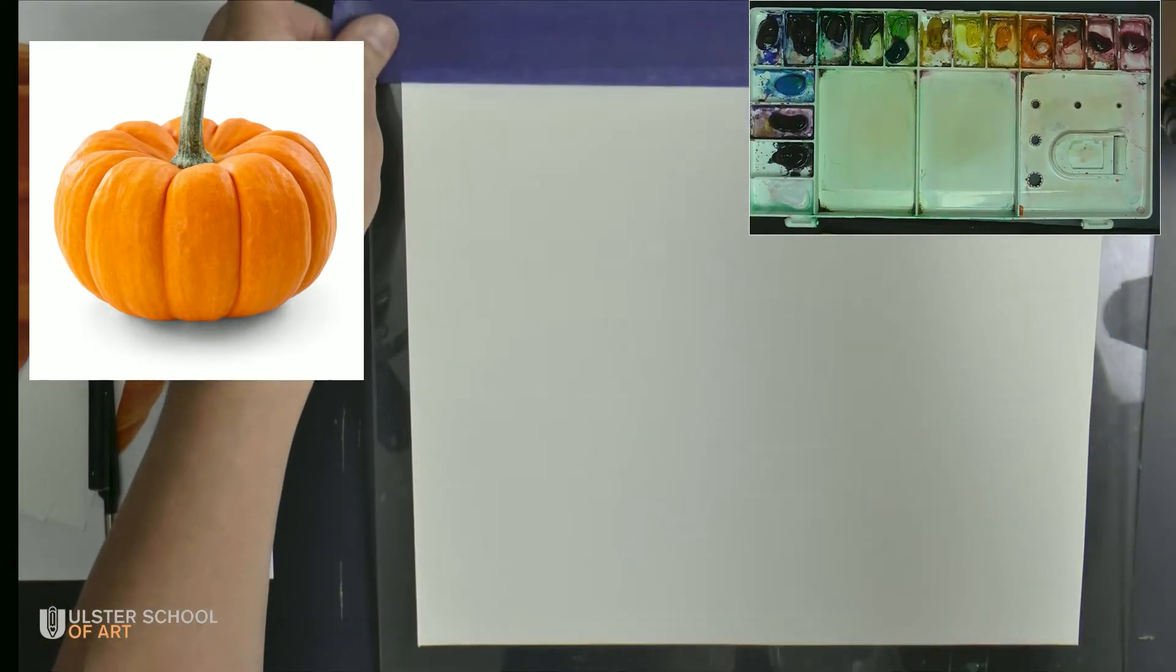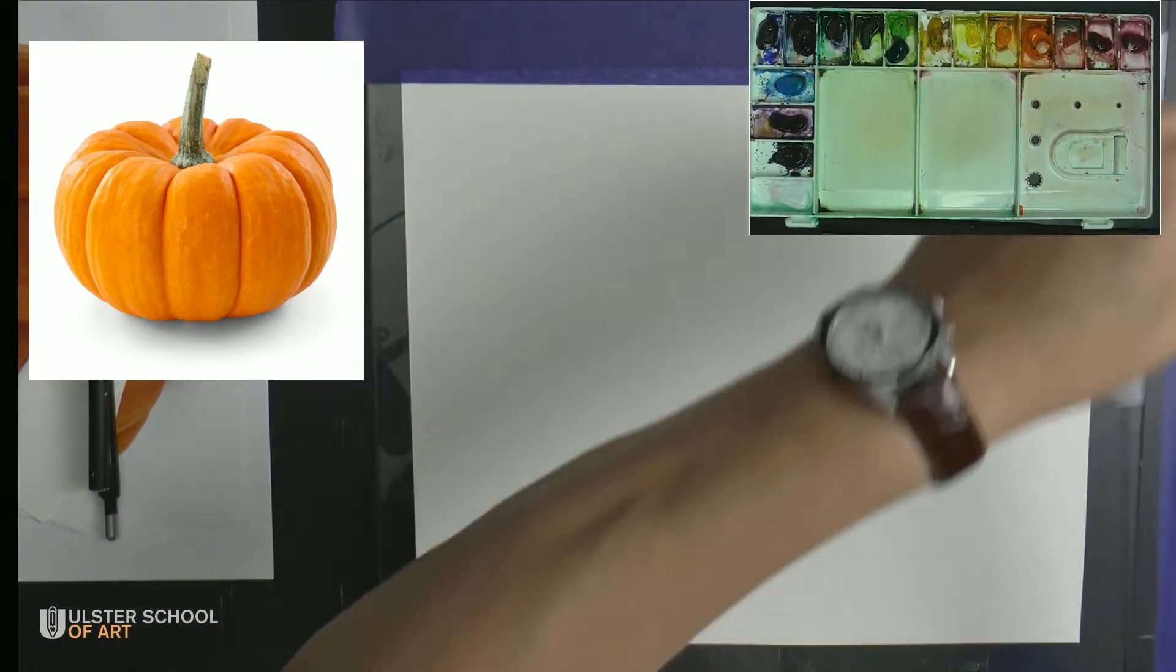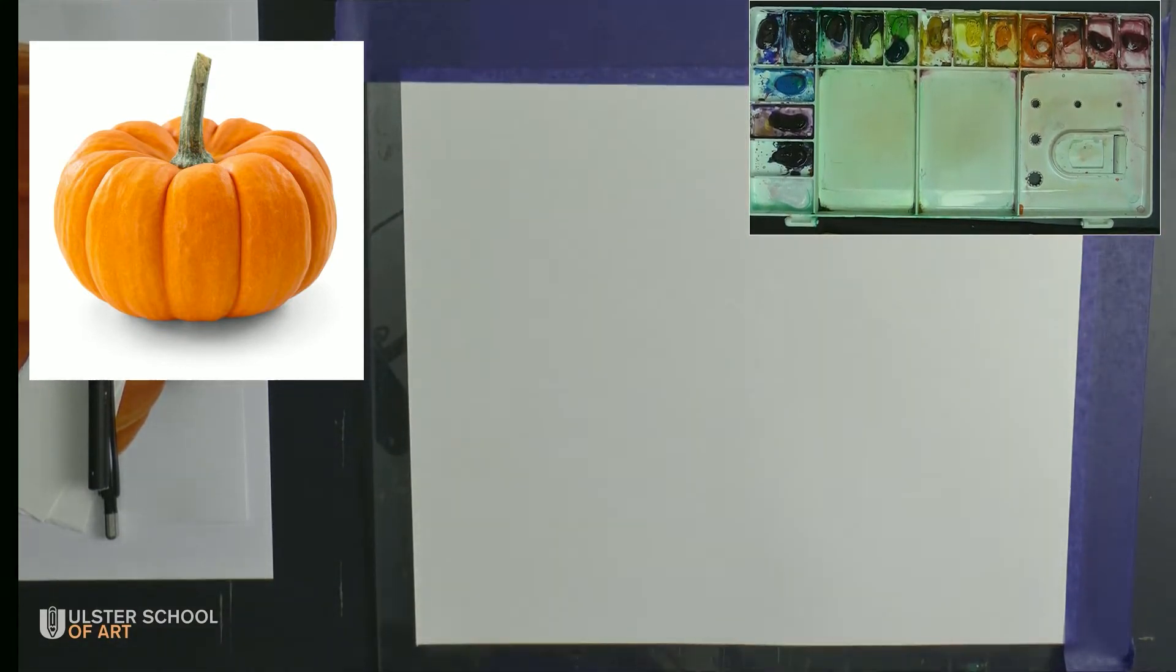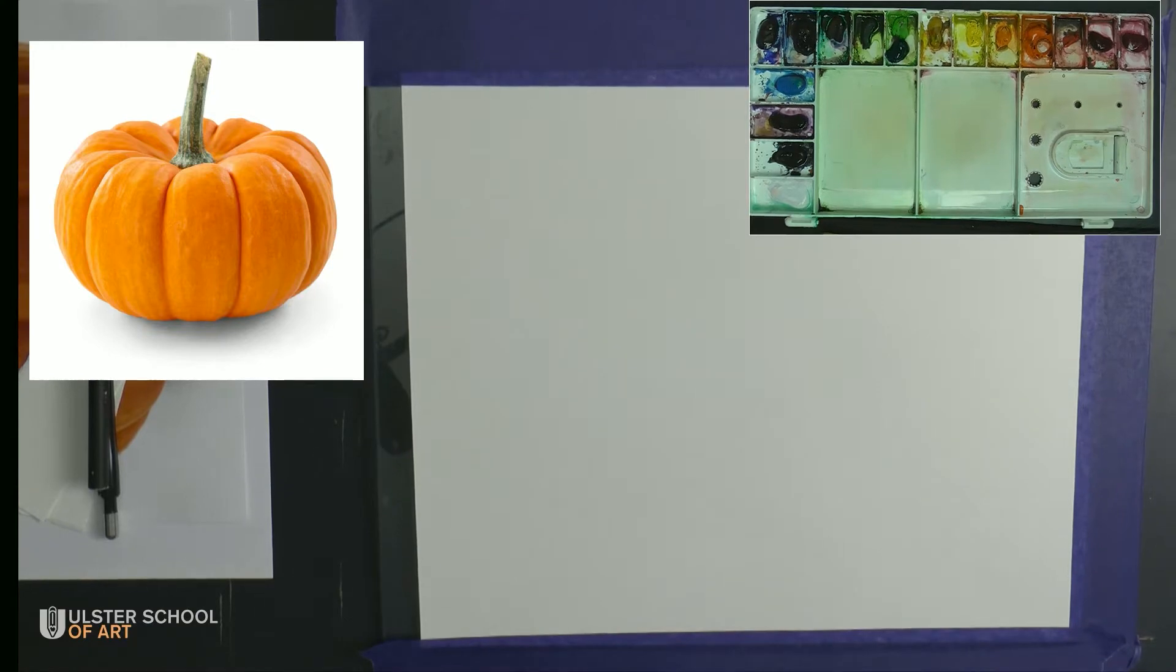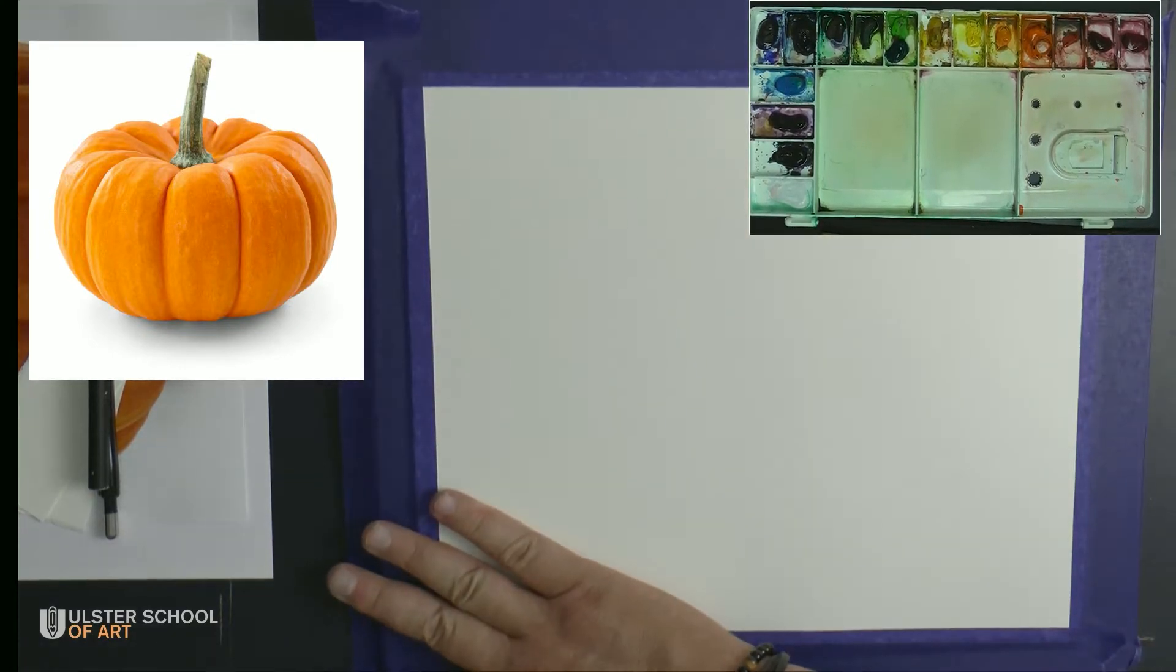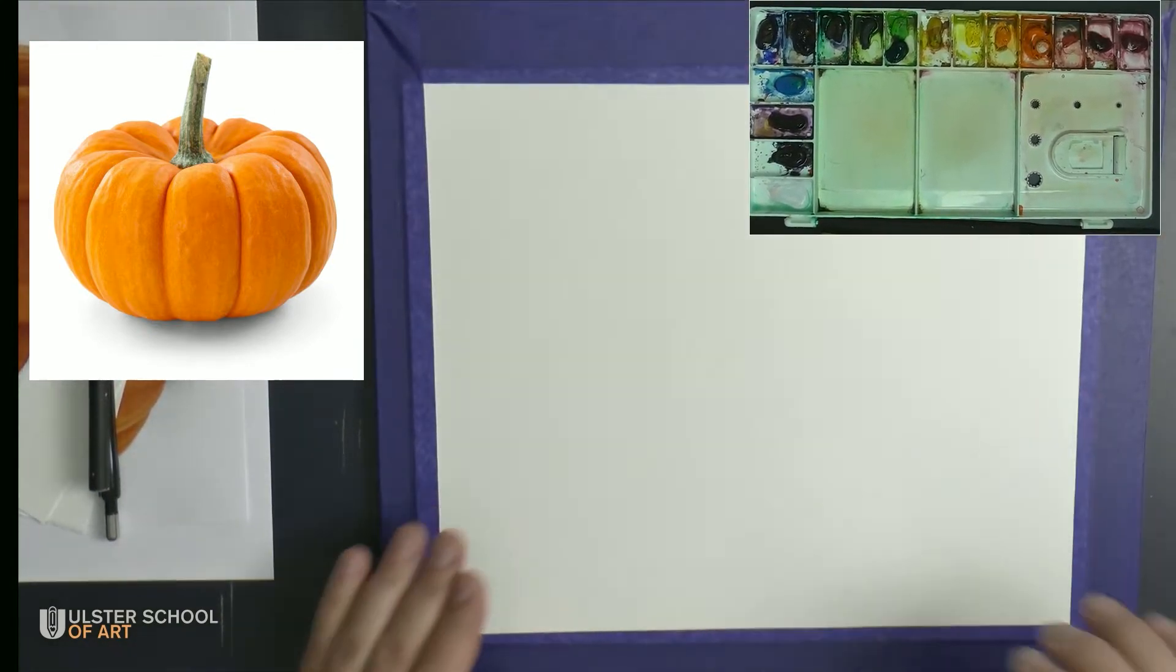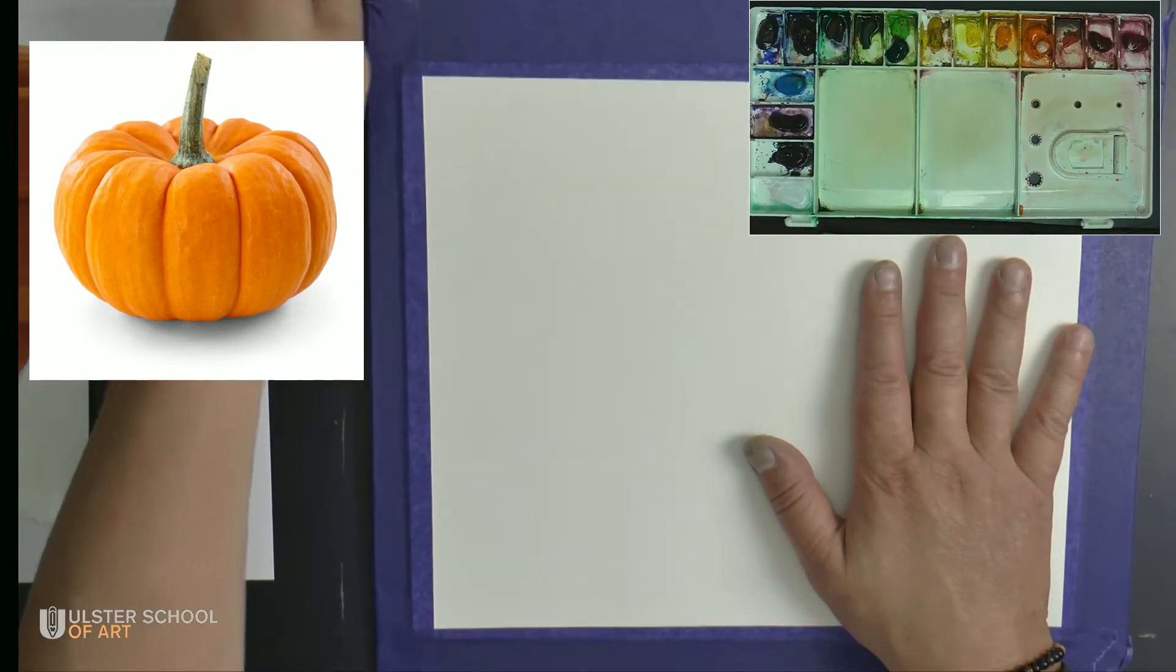And I'm going to fix it along all four edges. This procedure is supposed to be done directly before you start painting, drawing. There is no need to do it hours before, because that low tack masking tape tends to lift after some period of time. So we need to make sure it's not happening while we're painting. So our art board is prepared.